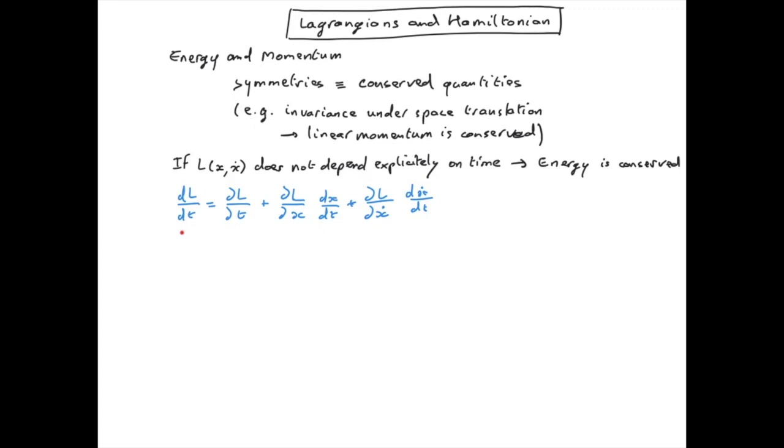The total derivative is equal to the partial derivative, plus we need to take into account the fact that x can depend on time, and of course the Lagrangian depends on x, so that's what this term here means. And the same thing for ẋ. But of course, if we have a Lagrangian which does not depend explicitly